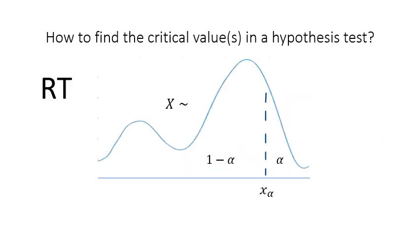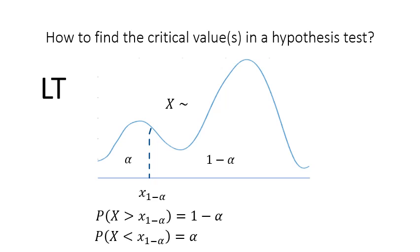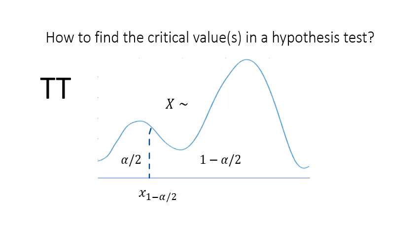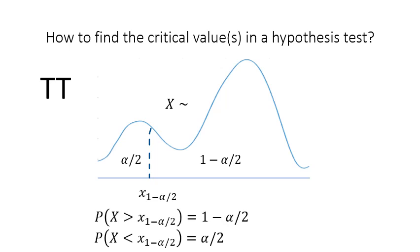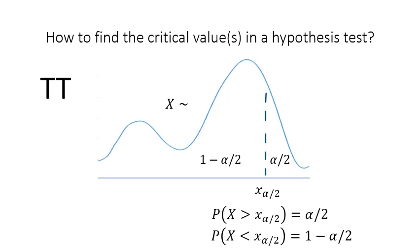To find the right critical value in a right-tailed test, we use the fact that the area to the right of that critical value is alpha, or equivalently the area to the left is 1 minus alpha. In a left-tailed test, the area to the right of the critical value is 1 minus alpha and the area to the left is alpha. In a two-tailed test, we find the right critical value using the fact that the area to the right is alpha over two, or the area to the left is 1 minus alpha over two.